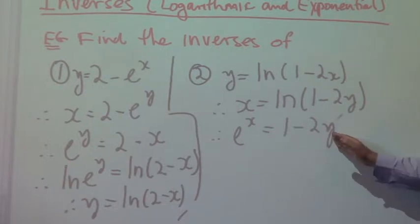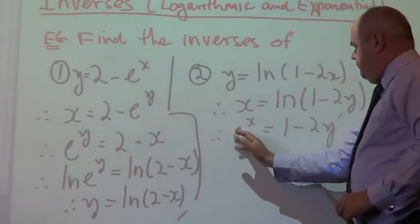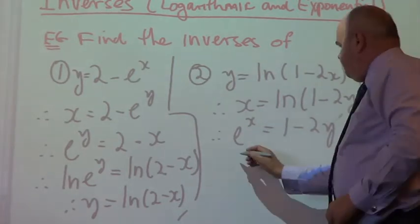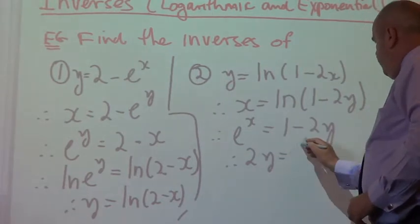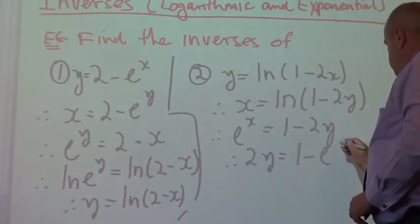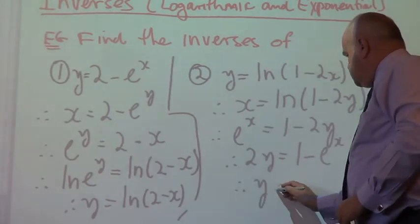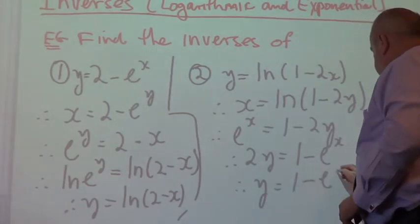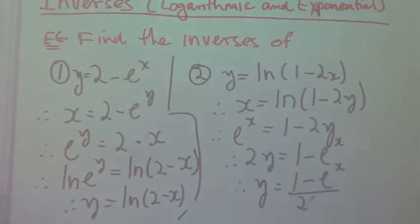Now, all we need to do is make y the subject of our equation. That's not too bad. So we're going to take that over there and that over there. So 2y equals 1 minus e to the power of x, just subtracting e to the power of x from both sides. And finally, of course, I will divide both sides by 2.